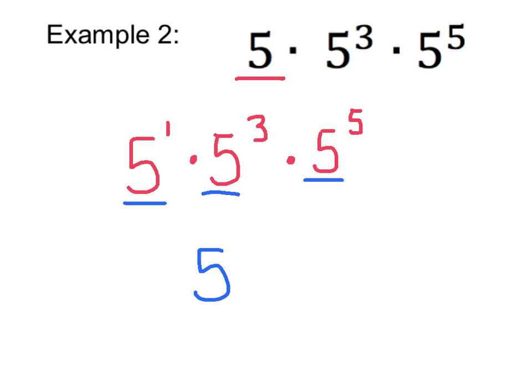So our base number in our answer will stay 5. If we have the same base number with several exponents, we may simply add the exponents and write them all as one exponent. So 1 plus 3 is 4, 4 plus 5 is 9, and our final answer will be 5 to the 9th power.